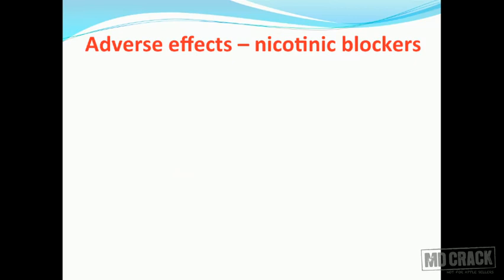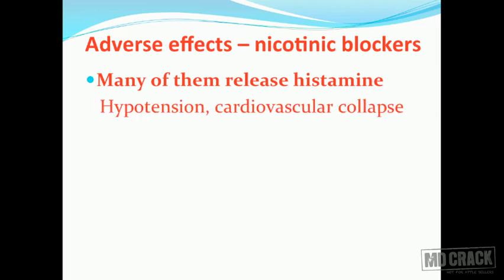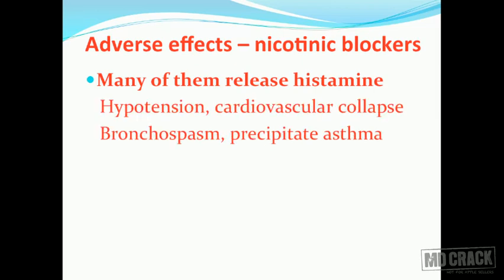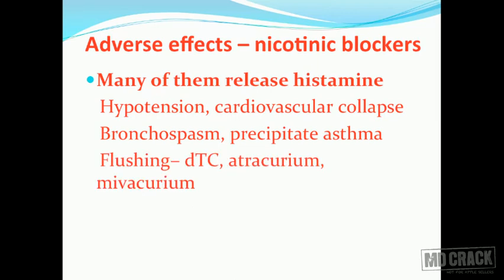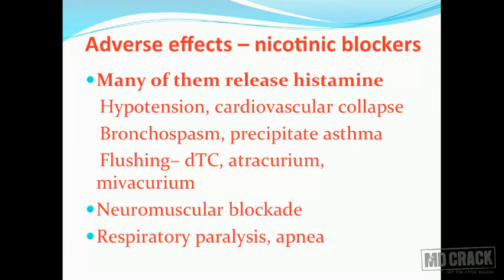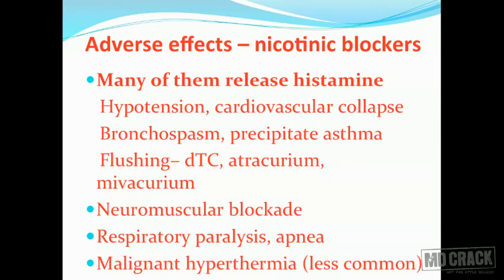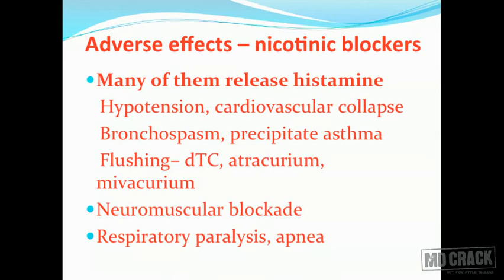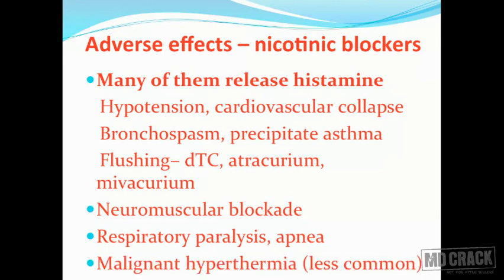Adverse effects of nicotinic blockers: many of them release histamine, causing hypotension, cardiovascular collapse, bronchospasm, and precipitation of bronchial asthma. Because of vasodilation, there will be flushing, especially with D-tubocurarine; atracurium and mivacurium among the newer agents are also known to produce flushing. There will also be neuromuscular blockade leading to respiratory paralysis and apnea. Malignant hyperthermia is also a known adverse effect of nicotinic blockers, but it is less common with nicotinic blockers and more common with succinylcholine.